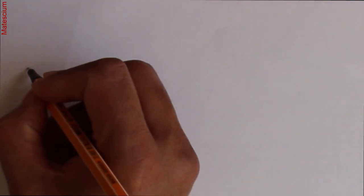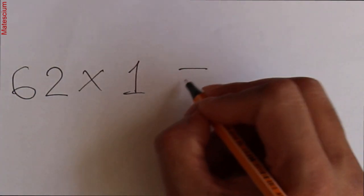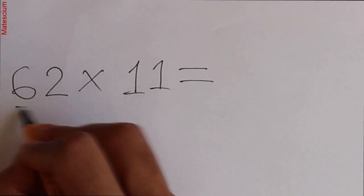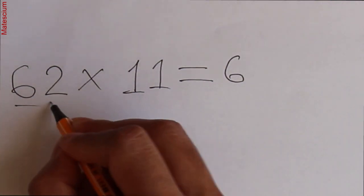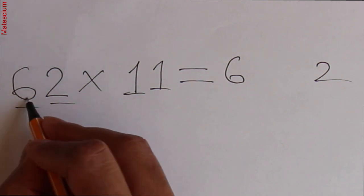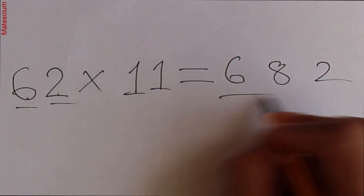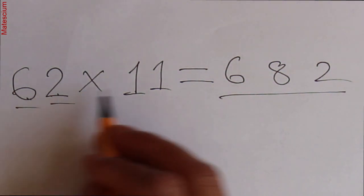Let's say a random number, 62, multiplied by 11. How to do that? We write the 6 on one side and the 2 on the other side. Then add 6 plus 2, which is 8. That means 682 is the answer for 62 times 11. Isn't it simple?